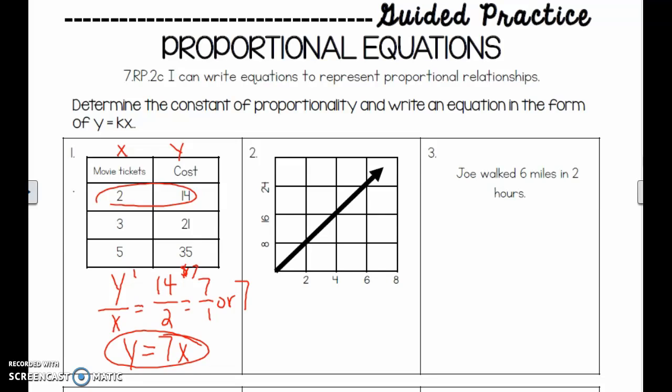In number 2, we have our graph. This does not show us a 1, so we also have to use y over x first to find our k. Pick any numbers. I'm going to pick 2. Remember, this is the x-axis. This is the y-axis. When I pick the 2, it corresponds to 8 in the y. So I'm going to put 8 on top, 2 on the bottom. When I simplify this, I get 4 over 1. That means k is 4. So I write my equation, y equals 4x. That's all I need to do.